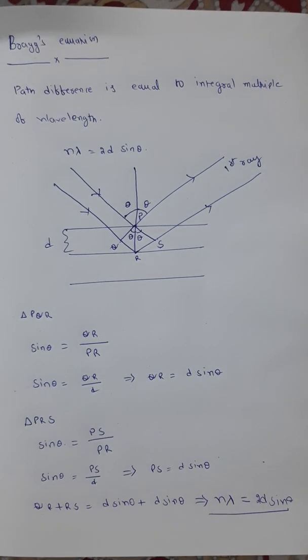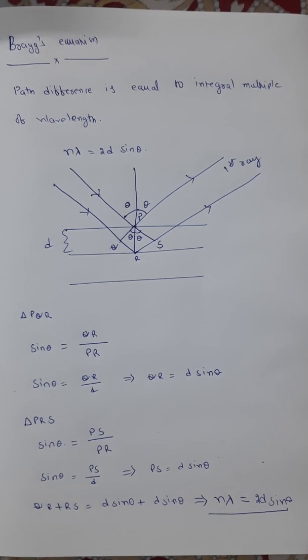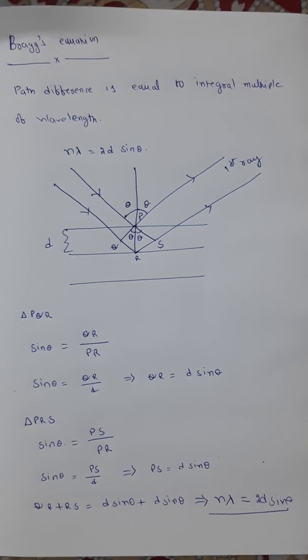In this equation, n is the order, lambda is the wavelength of the x-ray used, d is the interplanar distance, theta is the angle made by the x-ray. Thank you for watching.